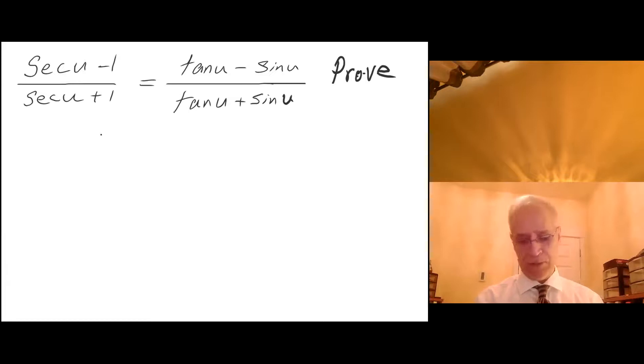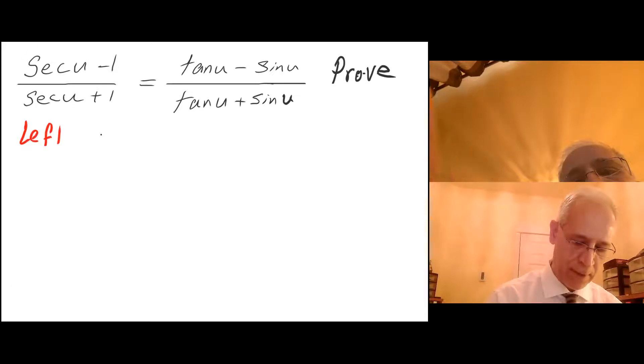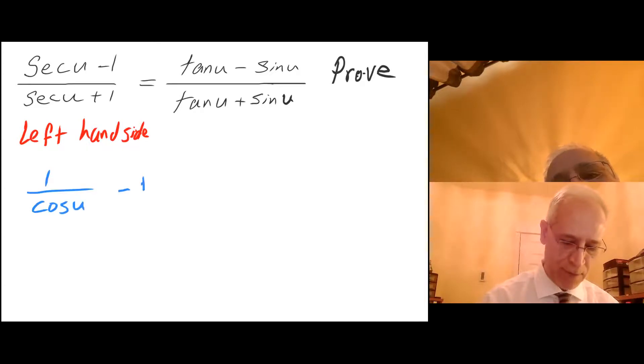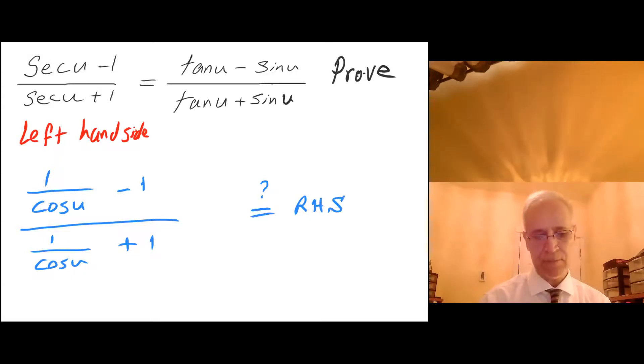Okay, as usual I'm going to work with the left hand side. What do I know about secant of u? I know secant is one over cosine, so I'm going to write this as one over cosine of u minus one in the numerator over one over cosine of u plus one. Does that equal the right hand side?